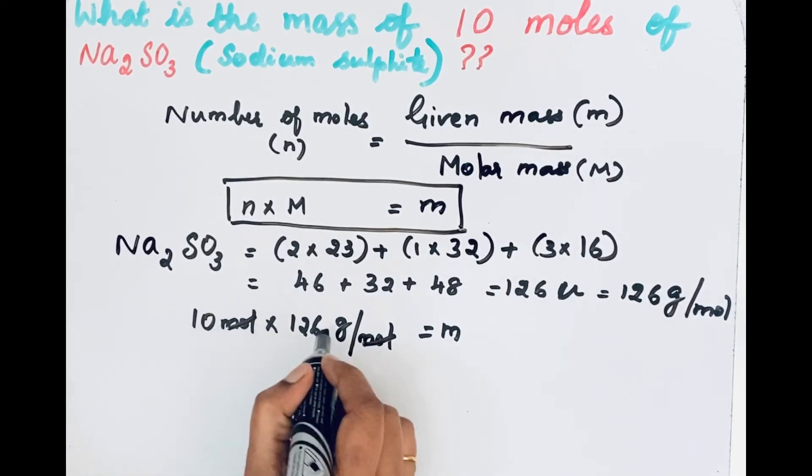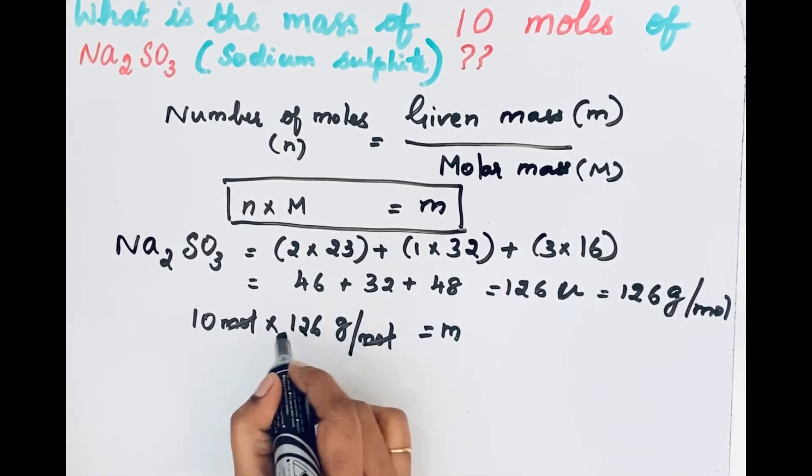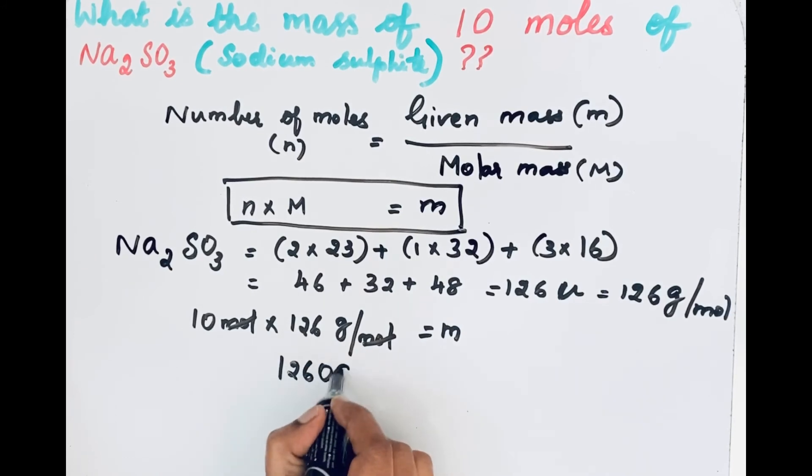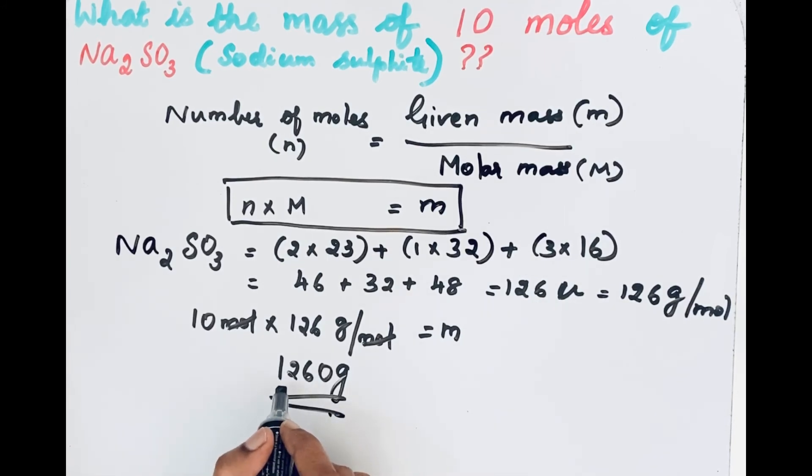See, this will strike out, will be cancelled out. So 10 times 126 gram equals 1260 gram. So the mass of 10 moles of sodium sulfite is 1260 gram. Thanks for watching.